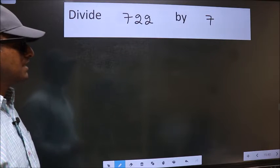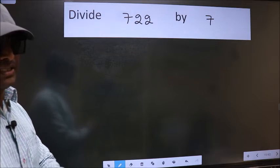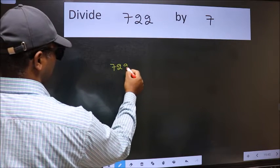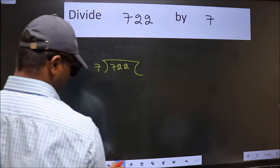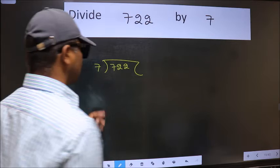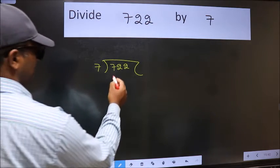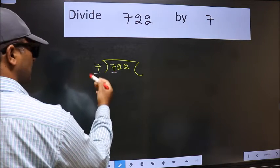To divide 722 by 7, we should frame the division this way: 722 here and 7 here. This is step one. We have 7 and 7. When do we get 7 in the 7 table? 7 times 1 is 7. Now we subtract and get zero.